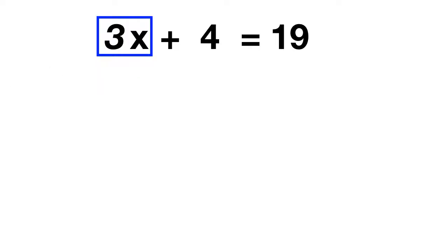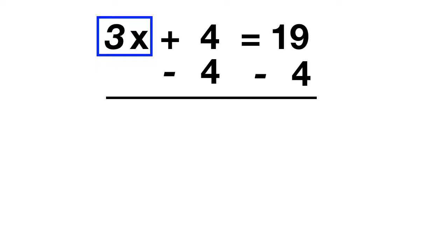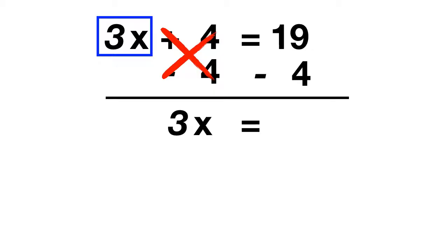So here we're going to cancel the plus 4. We can do that by subtracting 4 from both sides. Plus 4 and minus 4 cancel out, and you're left with just 3x. On the other side, 19 minus 4 gives us 15.